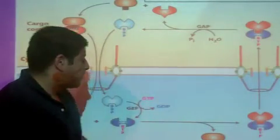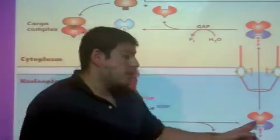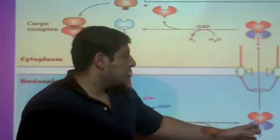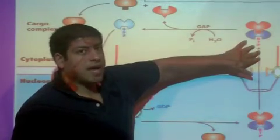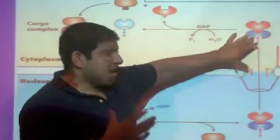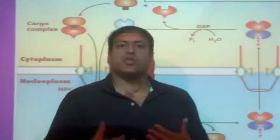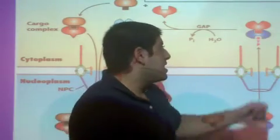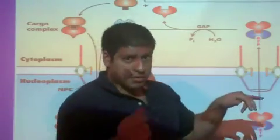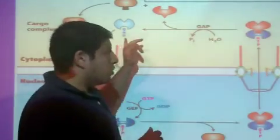Now, let's see what happens to it. So, the active state of RAN, so RAN-GTP, will now bind to importin. So, RAN-GTP binds with importin and now this structure is taken back out from the nucleus, back out into the cytoplasm. And then, once out in the cytoplasm, this RAN G protein has an intrinsic GTPase activity, which means that it has the ability to hydrolyze the GTP back to GDP plus Pi. And, when that happens, we release the importin and the RAN protein.